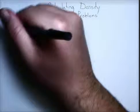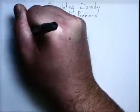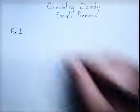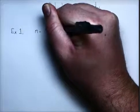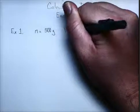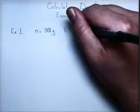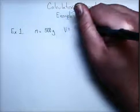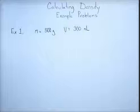So let's start with just the most basic example possible. What happens if we have an object with a mass of, we'll say, 500 grams and a volume of, let's say, 300 milliliters, we'll say it's a liquid.